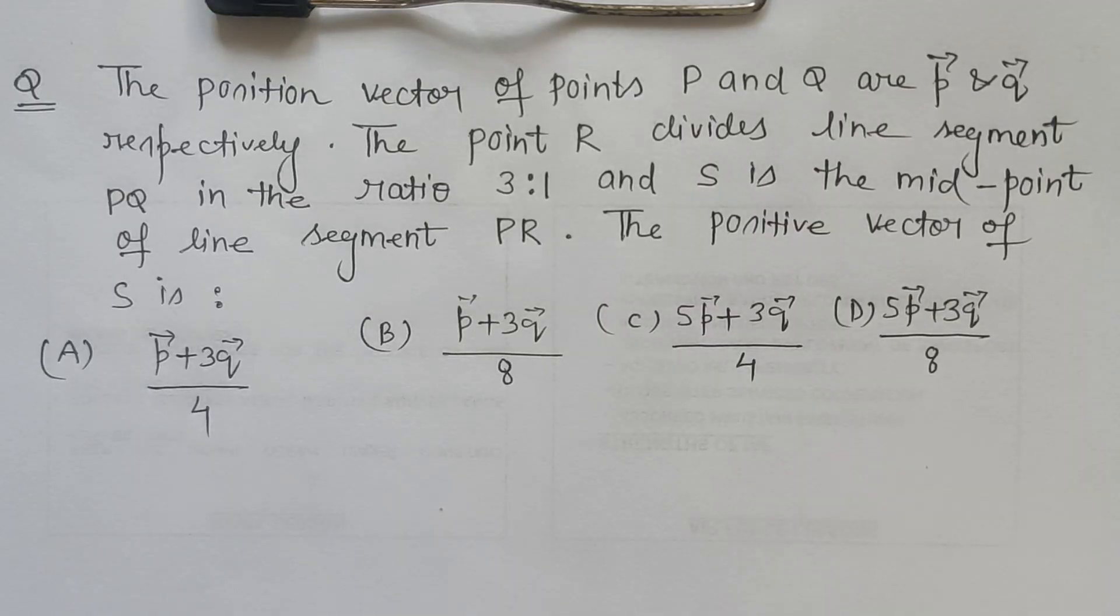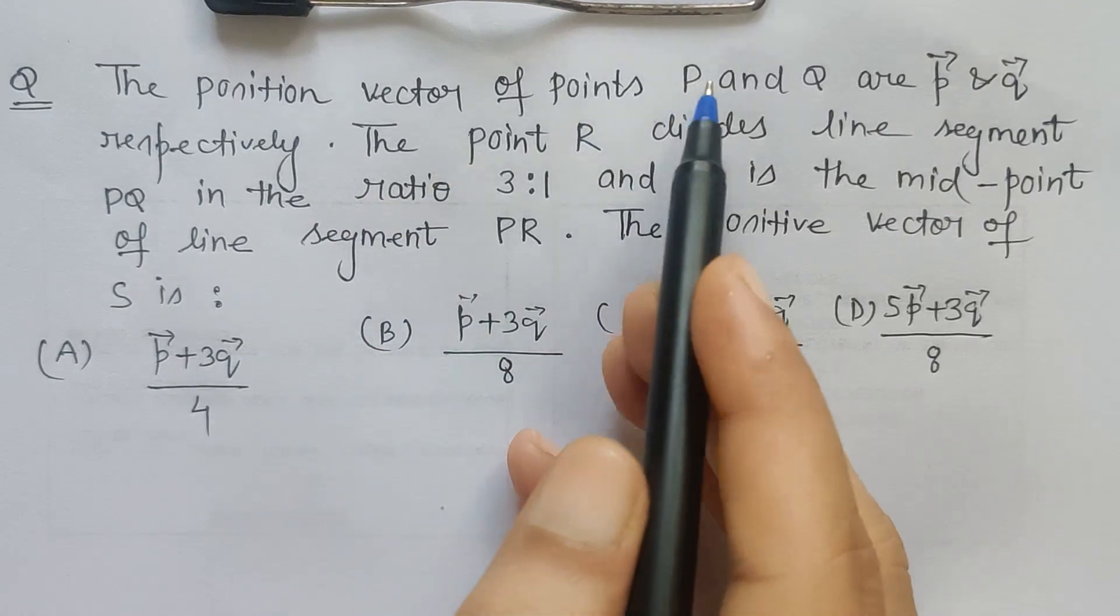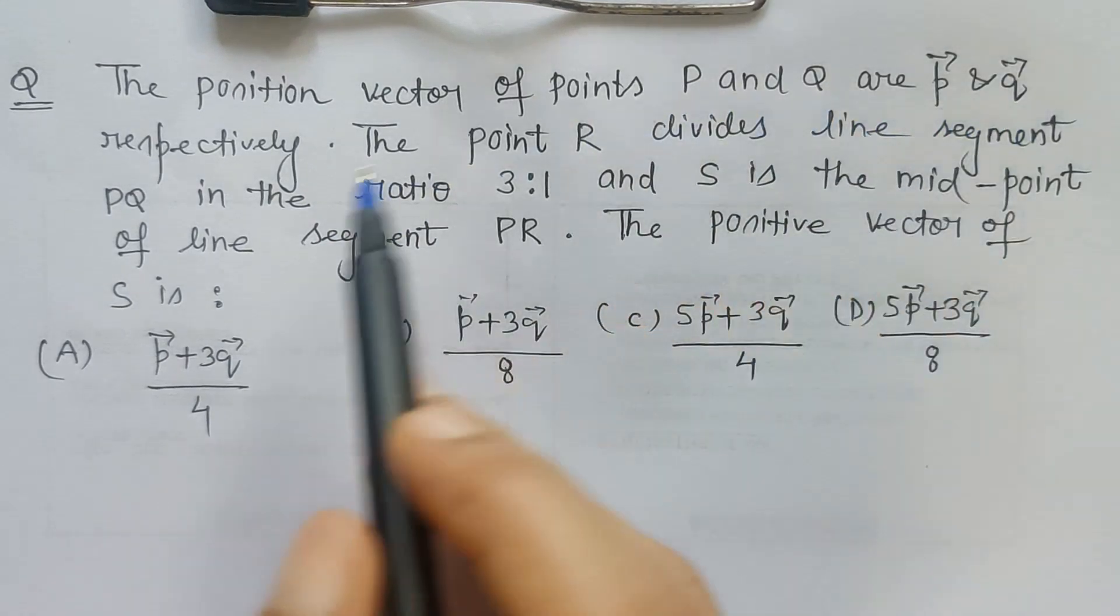Hello friends, this question is from the coordinate geometry topic where I have been given this scenario that the position vector of points P and Q are P vector and Q vector.